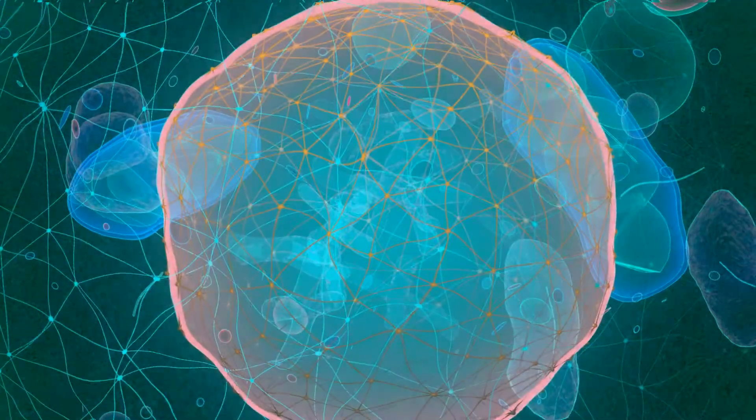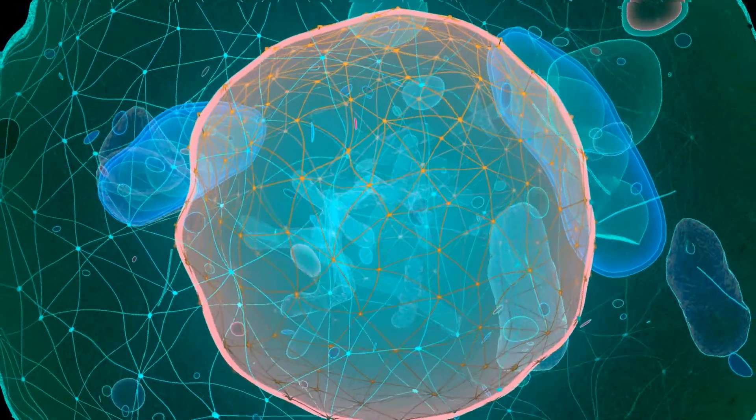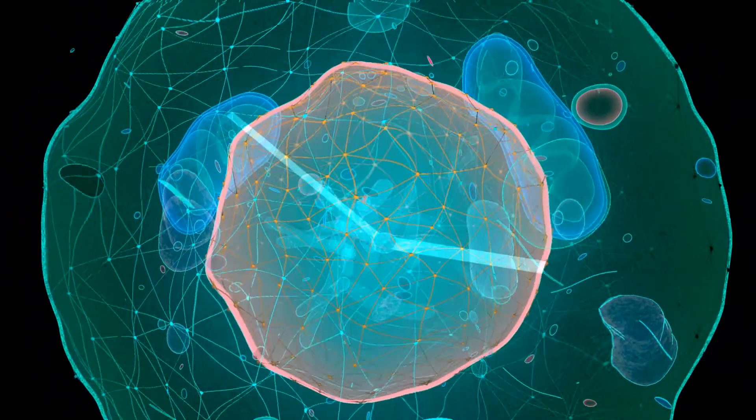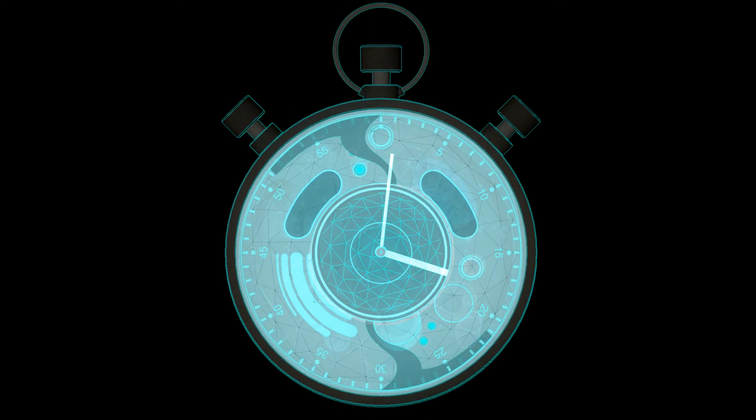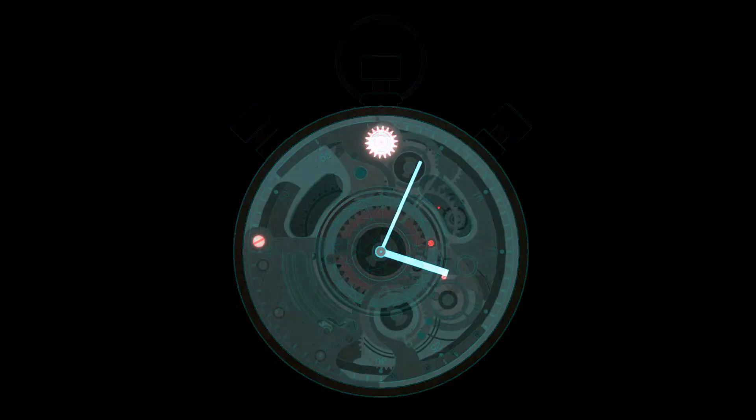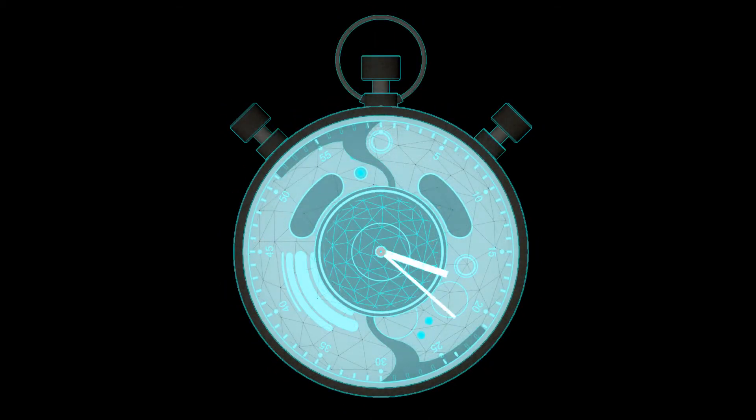But why is aneuploidy so frequently present in cancer cells? Well, let's compare a human cell to a smoothly running machine. When all of a sudden it is presented with a few extra parts, the machine will stutter and eventually halt or run out of control. This is what we think happens to the cell machinery.